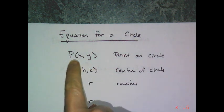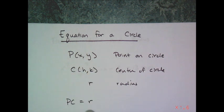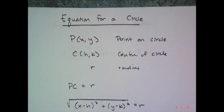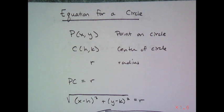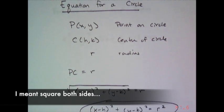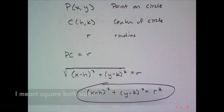Point on the circle (x,y), center of the circle (h,k), radius r. I'm looking for the distance PC to always equal r. So I use the distance formula and plug in for x and y. I get (x-h)² + (y-k)² = r. I square both sides and I get the equation for a circle.